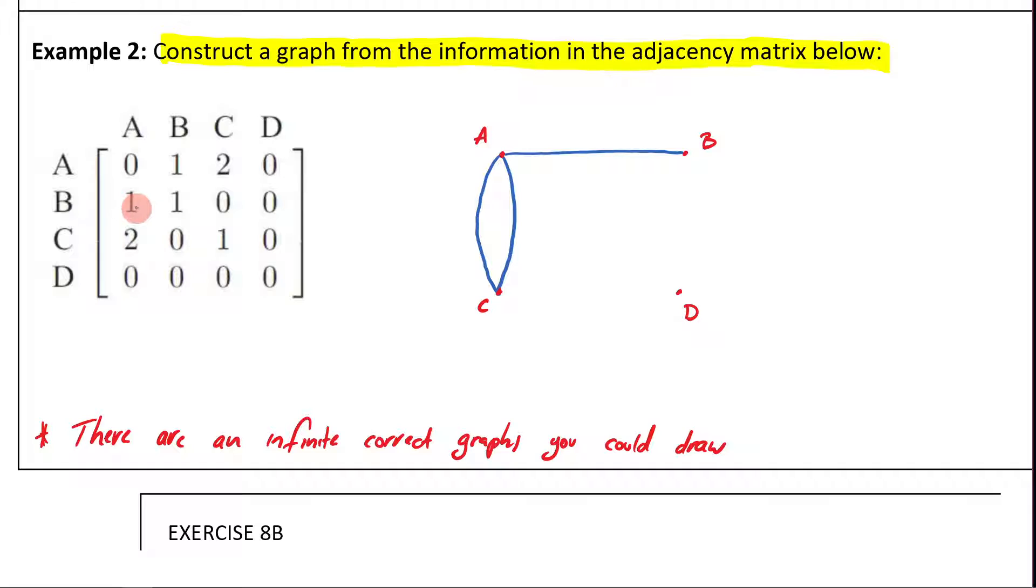B is connected to A. We've already got that information. B is connected to itself. B to B is that. So guess what I'm going to do? I'm going to do a little loop like that. B is not connected to anything else. We've got all zeros there.